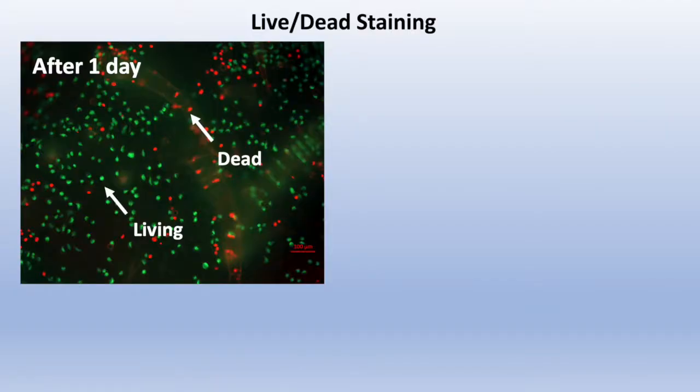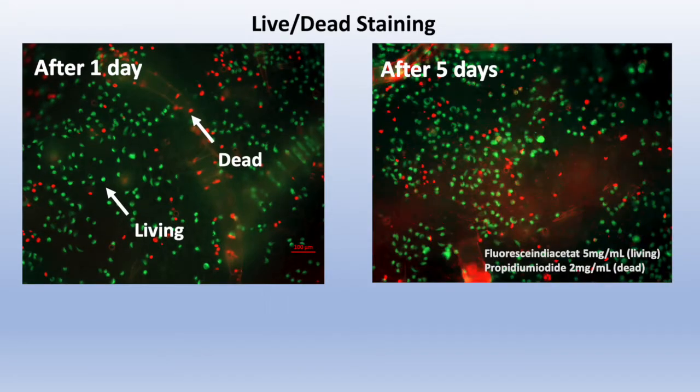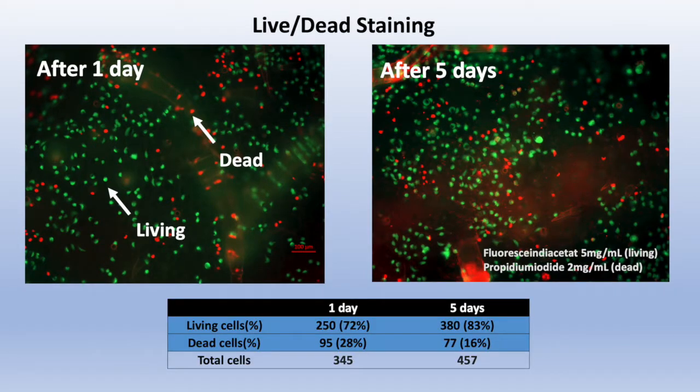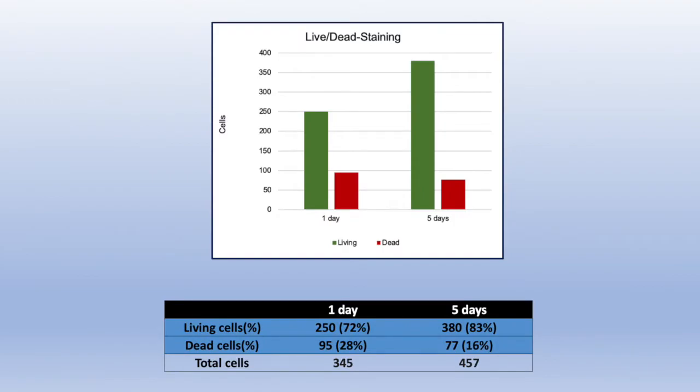In order to check whether our cells are vital, we performed a live-dead staining with fluorescein diacetate and propidium iodide. The results show that the cells are vital both at the beginning and after 5 days.